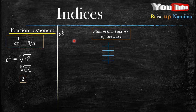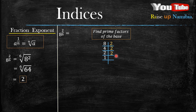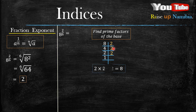We take the base, which is 8, and divide it by the first prime number, which is 2. What is 8 divided by 2? It gives us 4. What is 4 divided by 2? It gives us 2. What is 2 divided by 2? It's 1. Now count your 2s — we have three 2s. So this basically means 2 times 2 times 2, which is 2 multiplied by itself 3 times, giving you 8.